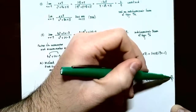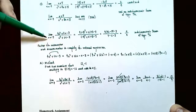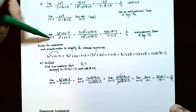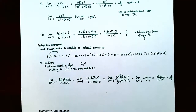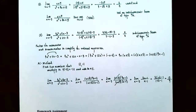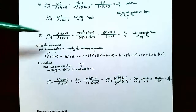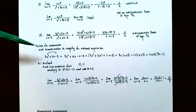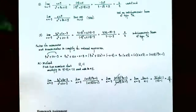This finishes our video on introduction to limits using algebraic methods and limit laws. We covered finding limits of polynomial and rational functions, and indeterminate forms of type 0/0. If you have questions about any examples or the homework, please let me know, and I'll see you in the next video when we talk about limits involving infinity.